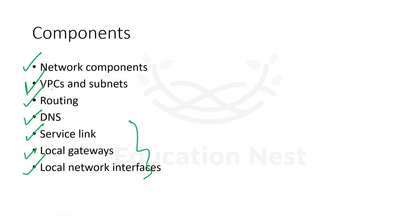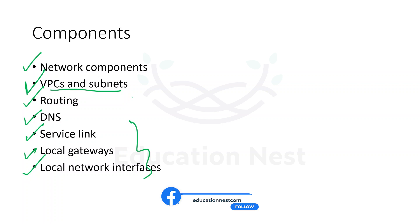VPC spans all availability zones in an AWS region. You can extend any VPC in a region to your Outpost by adding an Outpost subnet - specify the ARN of the Outpost when you create the subnet. Outpost supports multiple subnets and you cannot specify the underlying hardware where the instance is deployed, because the Outpost is a pool of AWS compute and storage capacity. Each Outpost can support multiple VPCs that can have one or more Outpost subnets.